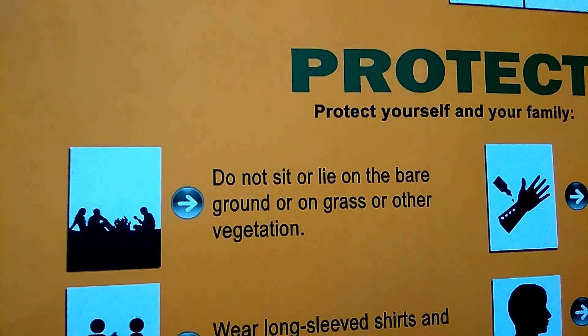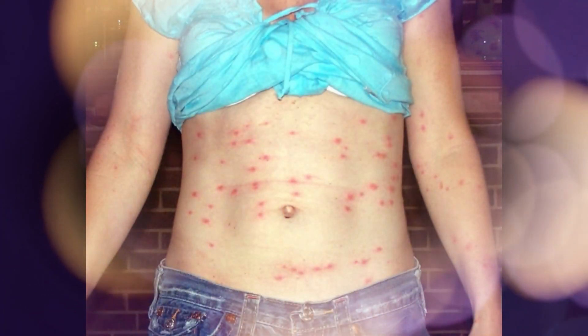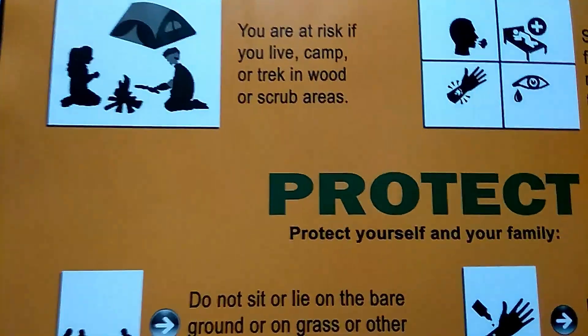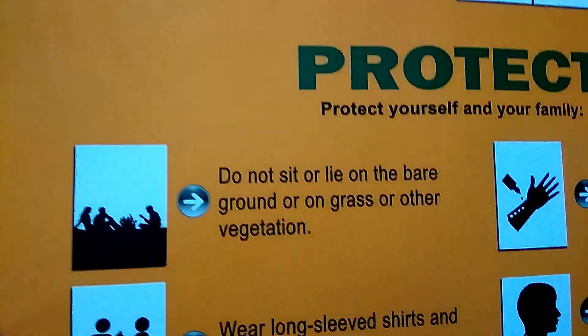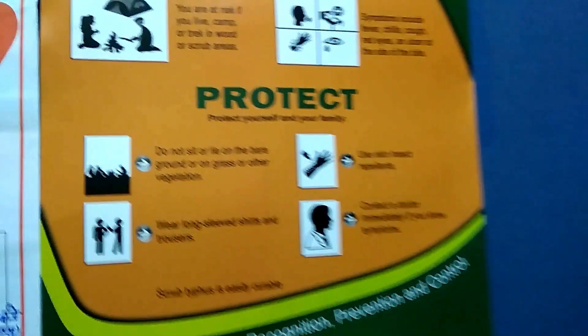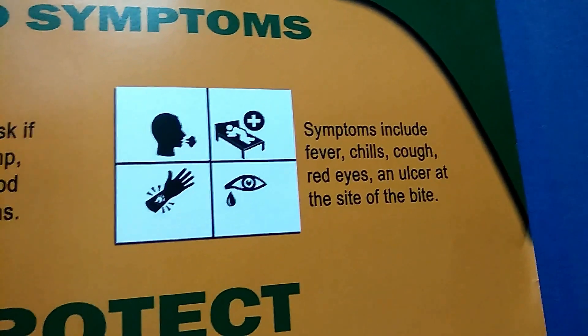The etiological agent of scrub typhus is Orientia tsutsugamushi, an obligate intracellular parasite, whereas typhoid is caused by Salmonella. Orientia tsutsugamushi — from Japanese, 'tsutsuga' meaning illness and 'mushi' meaning insect — is a mite-borne bacterium belonging to the family Rickettsiaceae, and is responsible for scrub typhus in humans.